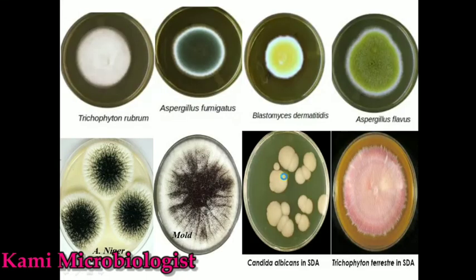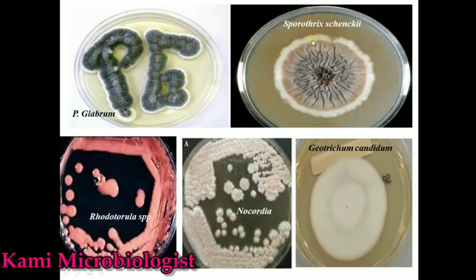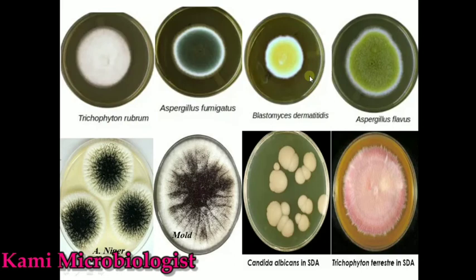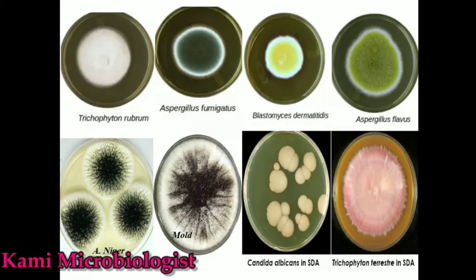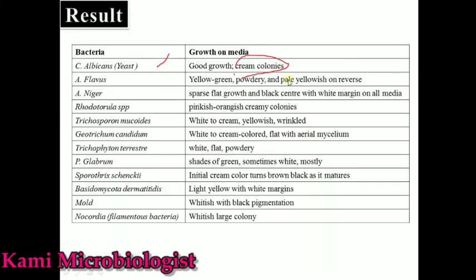Blastomyces dermatitidis mostly produces light yellow colonies with white margins — as you can see, these are the whitish-yellowish colonies. Mold produces whitish colonies with black pigmentation, as shown on screen.